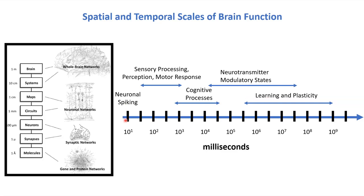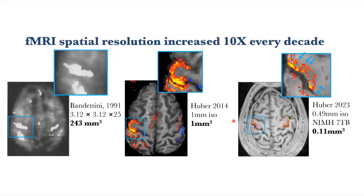The brain changes instantaneously and constantly over the years — hormonal changes, activation changes. We're trying to use layer fMRI to take a stab at the temporal and spatial scale we think is most relevant.